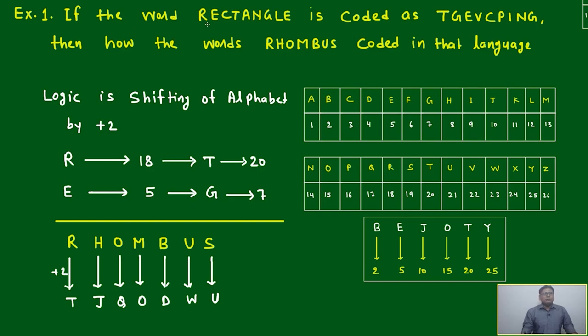Generally we will face problems like this: if the word RECTANGLE is coded as TGEVCP ING, then how is the word RHOMBUS coded in that same language? Any particular language or code - RECTANGLE is coded like this, then using the same logic how will RHOMBUS be represented?